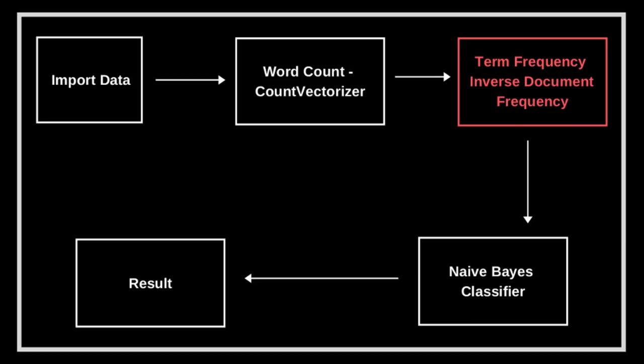The next step is Term Frequency–Inverse Document Frequency (TF-IDF). In the previous step, we counted words, but that has one issue: words like 'the' will appear very many times, but their large count doesn't actually help in classifying documents. TF-IDF addresses this. Term Frequency counts how often a word appears. Inverse Document Frequency gives a weight reflecting how important the word is for classification — so a word like 'the' gets the minimum weight.